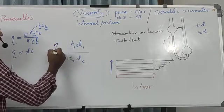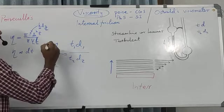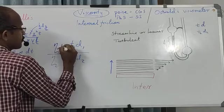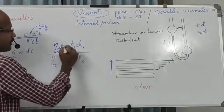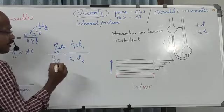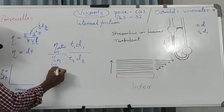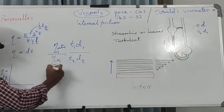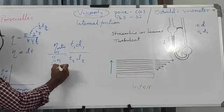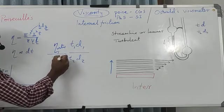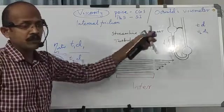Usually, eta₁ is taken as water, so we use the time of flow and density for water. We substitute all known values, and eta₂ — the viscosity of the second liquid — is the unknown quantity. This viscosity is determined relative to water, so it is called the relative viscosity of the liquid. This is how we calculate the relative viscosity of a liquid using the viscometry method.